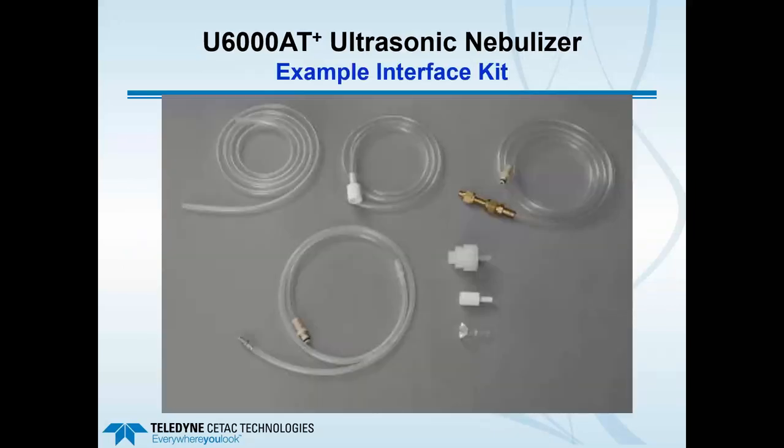Every unit, whether a U5000 or U6000, is shipped with an interface kit, which allows you to connect an argon gas supply to the ultrasonic nebulizer and the outlet to the host ICP torch. We have these kits for all the major manufacturers.